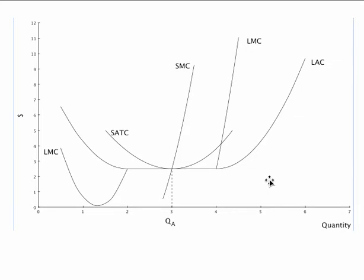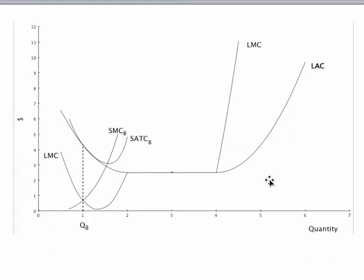If the firm builds a plant with capacity K sub B in the range of economies of scale, then the slope of long run average cost is negative. Short run average cost is tangent to long run average cost at Q sub B, which means that the minimum point on the short run average cost curve must be to the right of Q sub B.